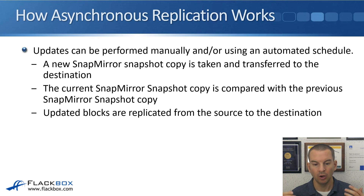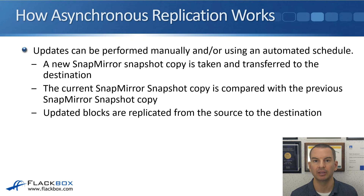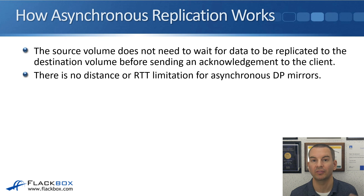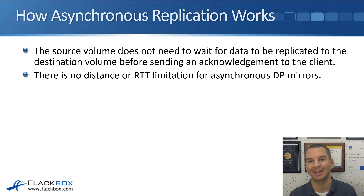With SnapMirror DP mirrors, the source side typically has one SnapMirror snapshot. The destination side has two: the current snapshot and the previous one. Whenever a new replication runs, the oldest snapshot is deleted and a new one is created, so there are always two snapshot copies on the destination in normal operations. Because the source does not wait for replication to complete before sending an acknowledgement, there is no distance or round-trip time limitation for asynchronous DP mirrors, though you should not replicate too frequently over a long distance.